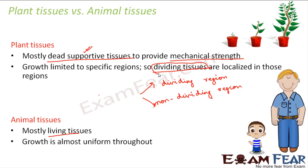Whereas in the case of animals, growth is almost uniform throughout. If you look at a small child who is born, then a four-year-old kid, and then an adult human being — everything has increased in size. It is not that only the height increased while the fingers and hands remained the same. Everything has grown uniformly — whether it is the face, fingers, height, or weight. So the growth is almost uniform everywhere in animals.